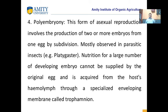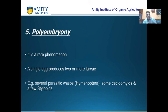Another type is polyembryony — an asexual reproduction involving the production of two or more embryos from one egg by subdivision. This is mostly observed in parasitic insects like Platygaster. Nutrition for the large number of developing embryos cannot be supplied by the original egg and is required from the host's hemolymph through a specialized enveloping membrane called the trophamnion. Examples are several parasitic wasps, some Cecidomyiidae, and a few stylopids.